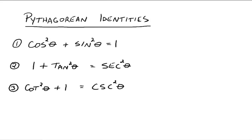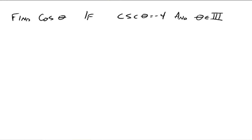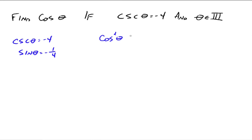Here's an example of how we can use these. Find cosine theta if cosecant theta is negative 4 and theta is in quadrant 3. Since cosecant theta is negative 4, that means sine theta is equal to negative 1 fourth because they're reciprocals of each other. We're trying to get to sine because we're looking for cosine. We also know that cosine squared theta plus sine squared theta equals 1, so we can plug in sine theta. Cosine squared theta plus negative 1 fourth squared equals 1.